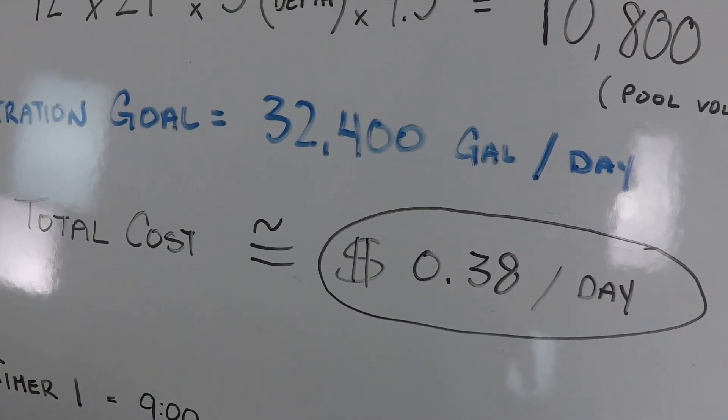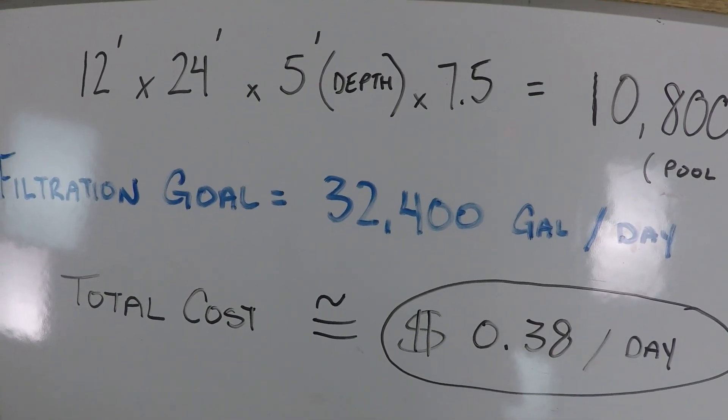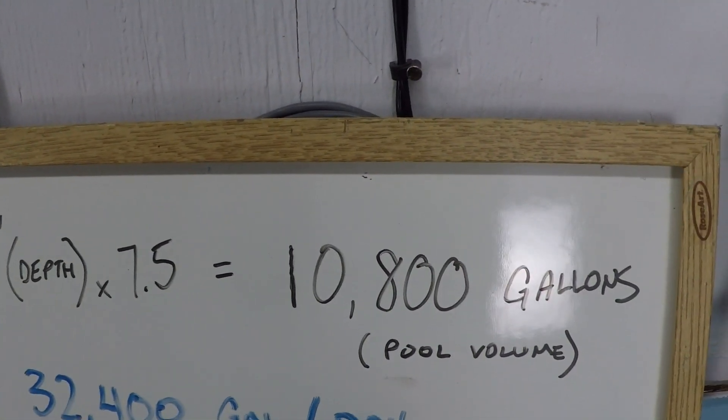And that's how we arrive at this filtration cost of approximately 38 cents per day for a very dynamic filtration schedule for a smaller swimming pool, somewhere around the 10,000 gallon range.